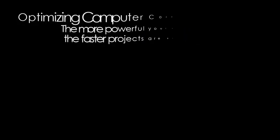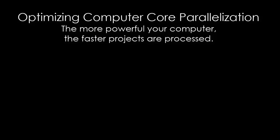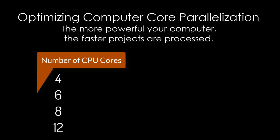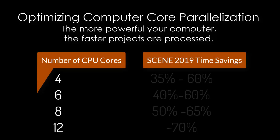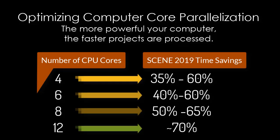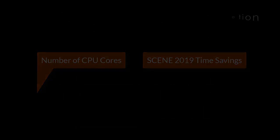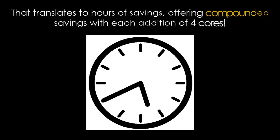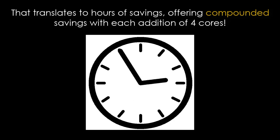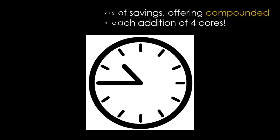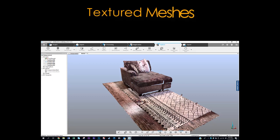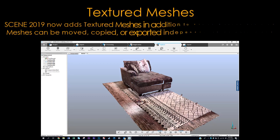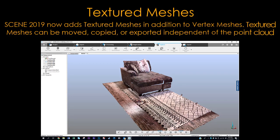Faster processing: by optimizing computer core parallelization, the more powerful your computer, the faster projects are processed. That translates to hours of savings, offering compounded savings with each addition of four cores.